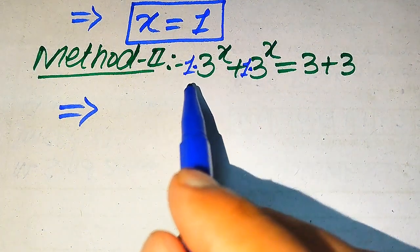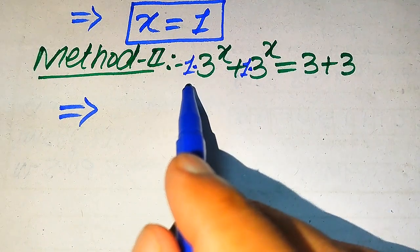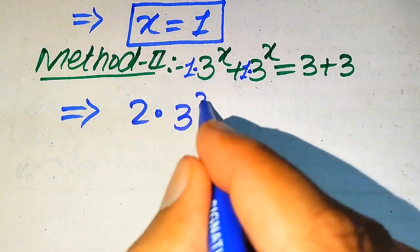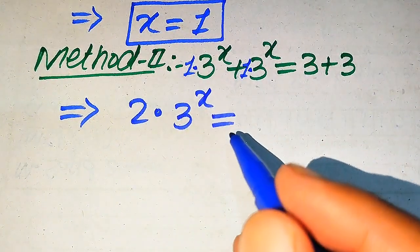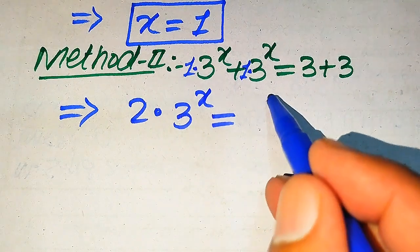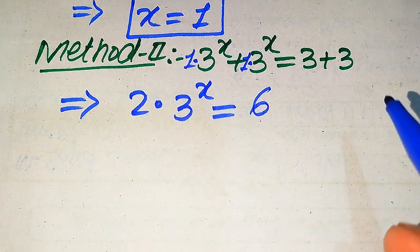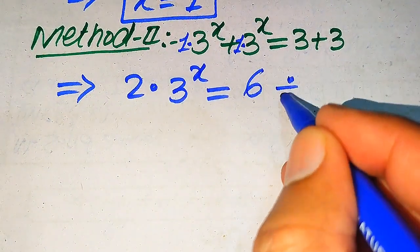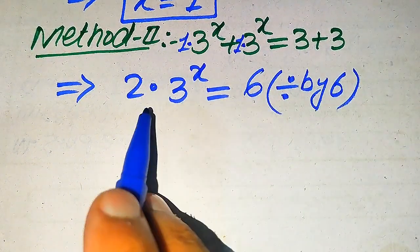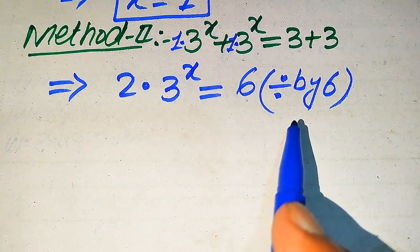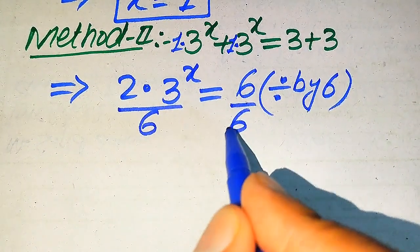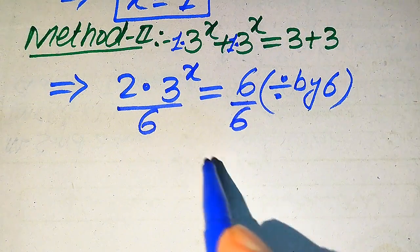You can see the coefficient of both terms is 1, and when you add 1 plus 1 you get 2 times 3 to the power of x equals 3 plus 3, which is 6. Now further in the next step we divide both sides by 6. In the first method we divided by 2, but here I give you another technique — we divide both sides by 6.